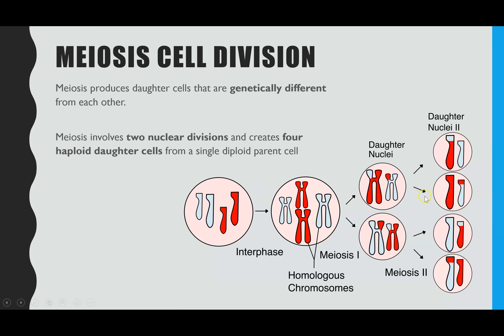That's what this diagram is showing — a basic overview of meiosis. Interphase is actually within the cell cycle rather than meiosis, but that's when the chromosomes would double. Then we have round one and round two of our division.